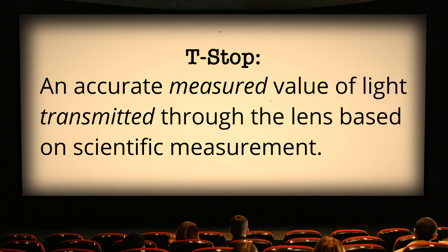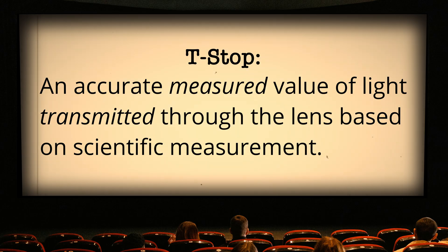That's where the t-stop comes in. The 'T' in t-stop stands for transmission. Where the f-stop is a calculated ratio, the t-stop is a measured value — it represents the actual amount of light transmitted through the lens, in other words, how much light really is hitting your sensor. If you've ever wondered why a cinema lens might say T2.8 instead of f/2.8, that's why.